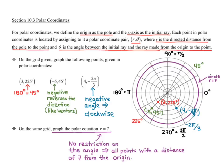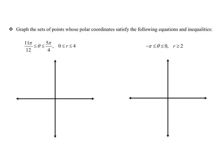That's the basics on how to plot points and graph r equals a number in polar coordinates. Now let's look at some slightly more complicated graphs — we want to graph the sets of points whose polar coordinates satisfy the following equations and inequalities.